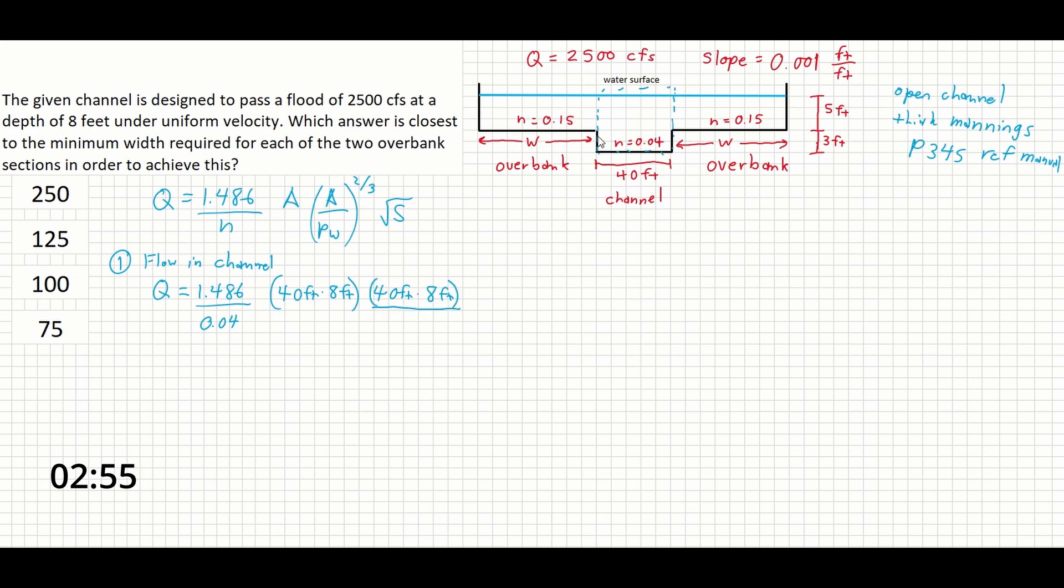The wetted perimeter is only the area in contact with the channel bottom, so we're going to have 3 plus 40 plus 3. The rest of this doesn't have a frictional force from the wall associated with it. So that's going to be, and all of those are in feet, and all of that is to the 2 thirds, and the slope we know is 0.001 square root.